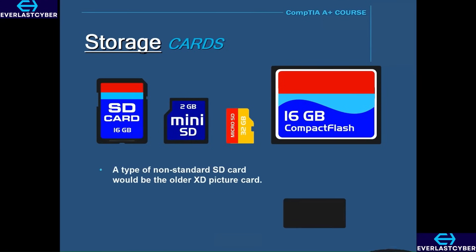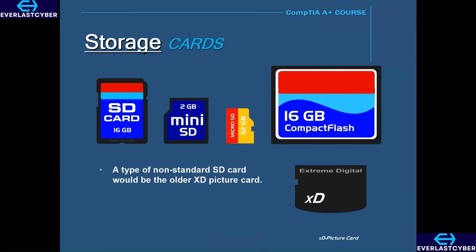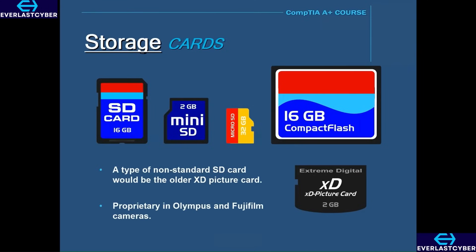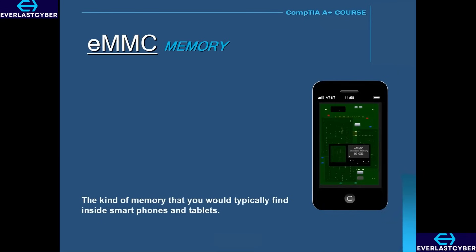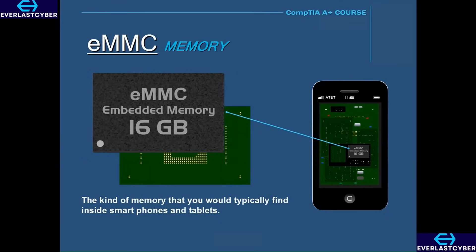A type of non-standard SD card is the older XD picture card, where XD stands for extreme digital. This was a type that was proprietary to Olympus and Fujifilm cameras. The kind of memory found inside smartphones and tablets is called eMMC, which stands for embedded multimedia controller. eMMC consists of putting flash memory and a flash memory controller into one package. This is the tablet's or smartphone's internal or embedded memory, and not external storage like an SD card.